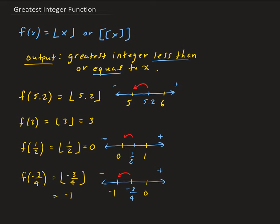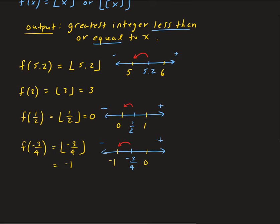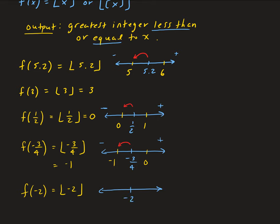How about f of negative 2? On the number line, negative 2 has minus 3 on one side and negative 1 on the other. Since negative 2 is already an integer, by the definition (less than or equal to), the output is just minus 2.